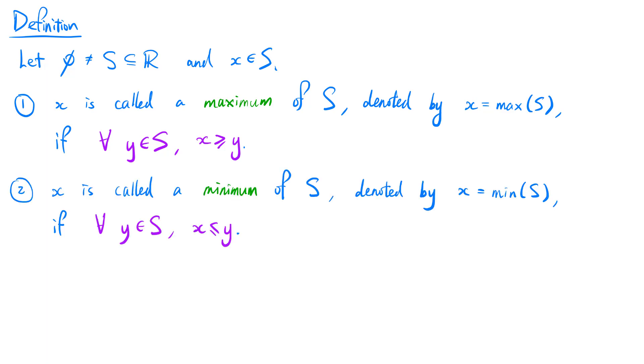x is called a minimum of s, denoted by x equals min(s), if for all elements y in s, x is less than or equal to y.